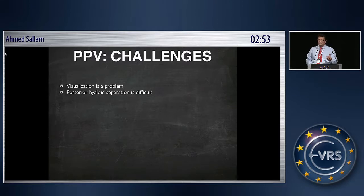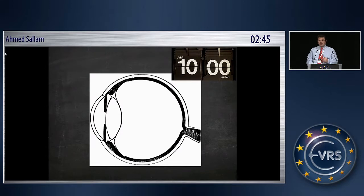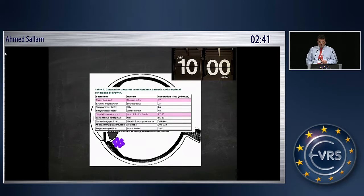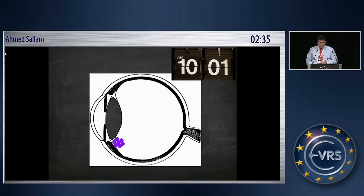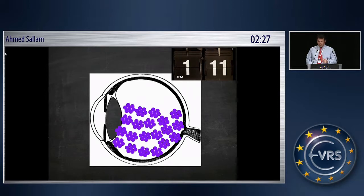There are vitrectomy challenges: visualization is a problem, peeling the hyaloid is difficult and dangerous, and there are logistics issues. Imagine setting up a vitrectomy — as time goes by, staph epidermidis, for example, is doubling every 30 minutes. Every 20 to 30 minutes, there is doubling of the organism load.